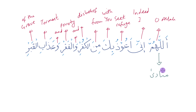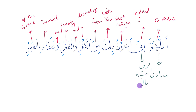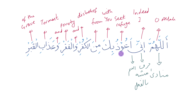And then you have inni a'udhu bika. Inna is harf mushabbaha bil-fi'l — how many harf mushabbaha bil-fi'ls are there? Put them in the comments below. This is harf mushabbaha bil-fi'l; it requires an ism and a khabar. Here's the ism — it's 'I', hidden inside of it: inni. So inni means 'indeed I.' And then a'udhu.